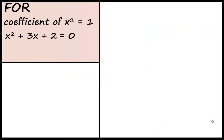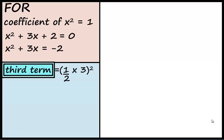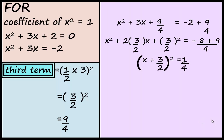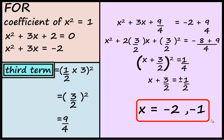Let us now start with an example where the coefficient of x square equals 1: x square plus 3x plus 2 equals 0. Take constant term 2 to the right hand side: x square plus 3x equals minus 2. Here coefficient of x equals 3, so the third term equals half into coefficient of x, squared, which equals 9 by 4. Adding 9 by 4 to both sides: x square plus 3x plus 9 by 4 equals minus 2 plus 9 by 4. Therefore x plus 3 by 2 the whole square equals 1 by 4. Therefore x plus 3 by 2 equals plus or minus 1 by 2. Therefore x equals minus 2 or x equals minus 1.